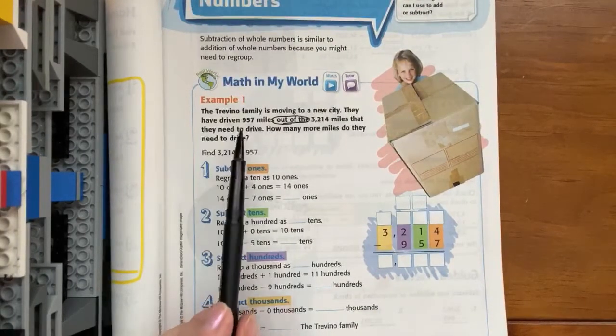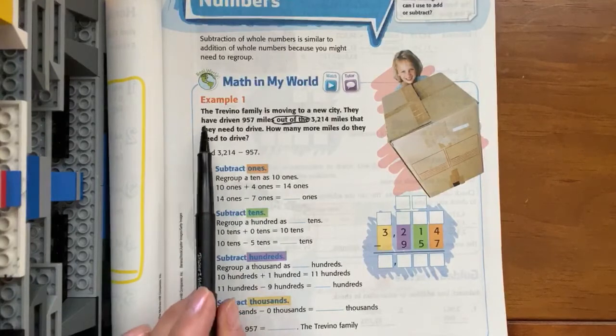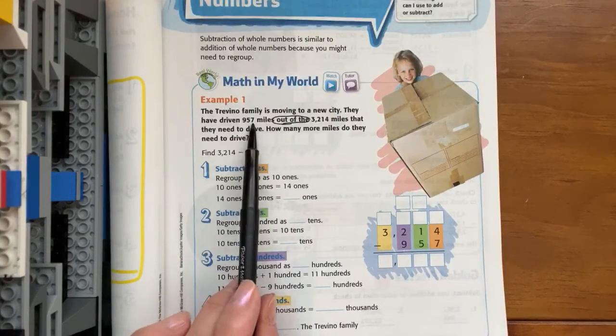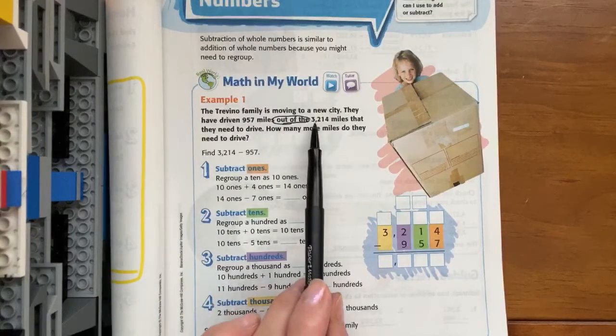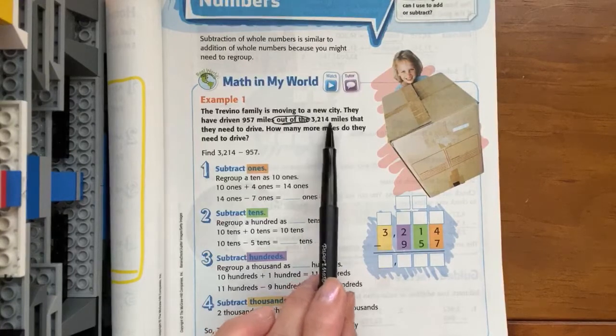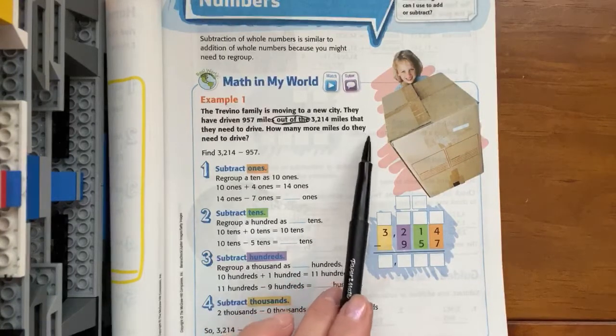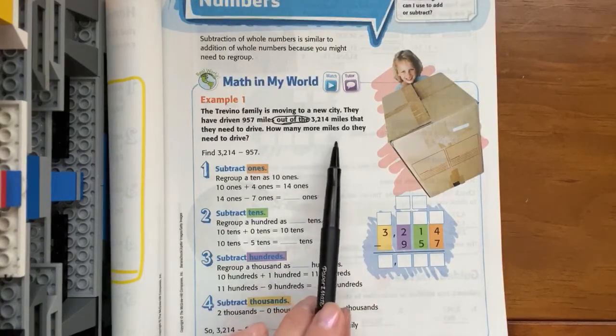The Trevino family is moving to a new city. They've already driven 957 miles out of the 3,214 that they still need to drive. So how many more miles do they need to go?